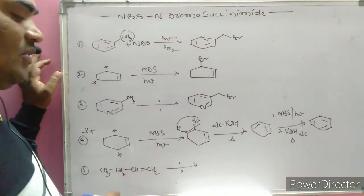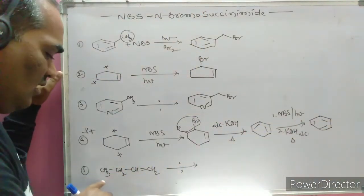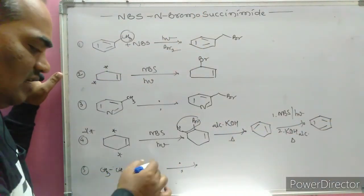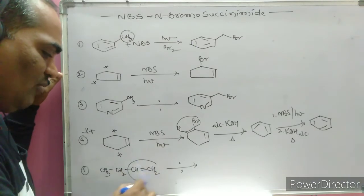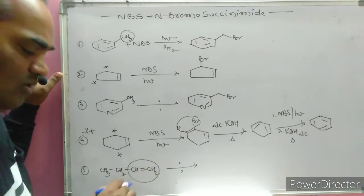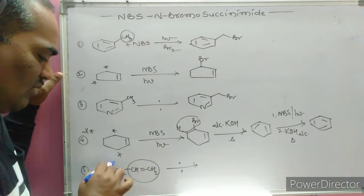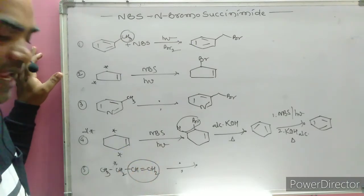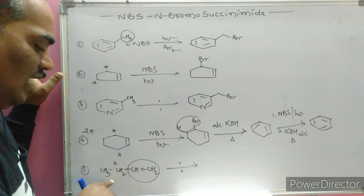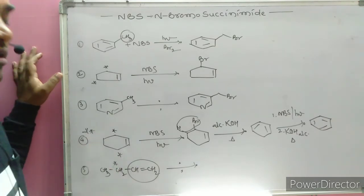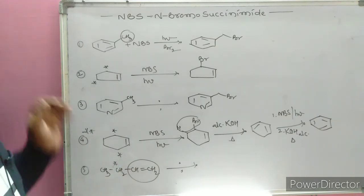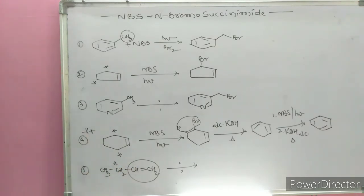For 1-butene: the double-bonded carbon atoms are identified, and the next carbon atom adjacent to the double bond is the allylic position. At that position, bromine is substituted using the NBS reagent.